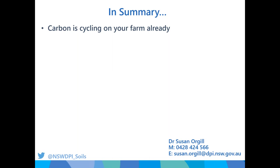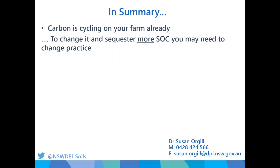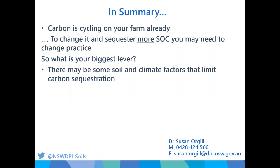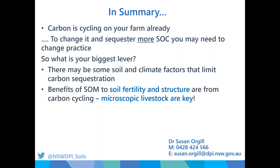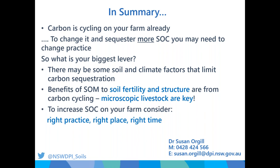In summary: carbon cycling is already happening on your farm. What you can influence is the size of the arrows moving through that system. To change that carbon cycle and sequester more, you may need to change practice — think about what's your biggest lever. Is it soil acidity, phosphorus deficiency, or grazing management? There will be some soil and climate factors limiting carbon sequestration, but producers are very agile at working within their environment. The benefits of soil organic matter are indisputable — it's about the right practice for you, in the right place, at the right time.